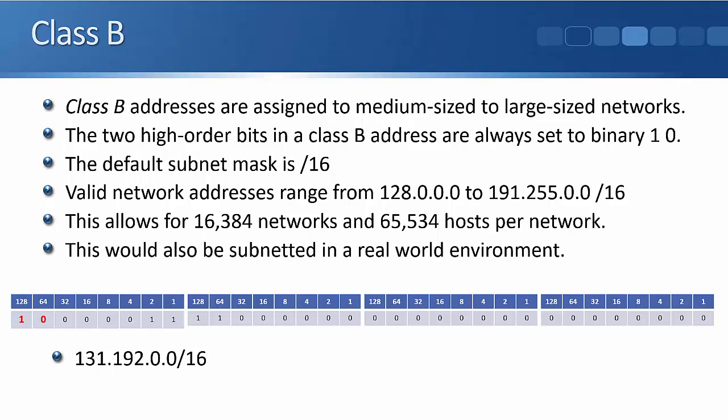The valid network addresses range from 128.0.0.0 to 191.255.0.0. The subnet mask is the first two octets, so the ranges use the first two octets: 128.0 to 191.255. That allows for 16,384 networks and 65,534 hosts on each of those networks.